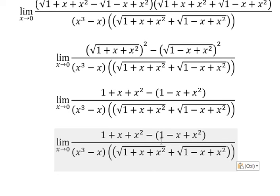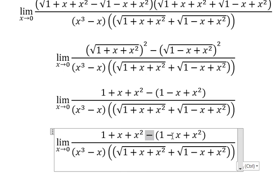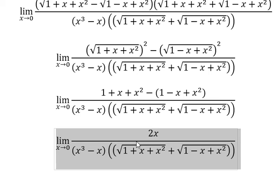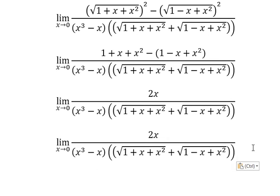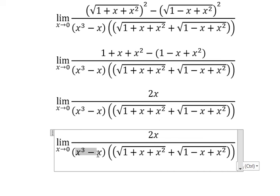1 minus 1, x squared minus x squared. Negative with the negative, you get the positive. So this one, you will get 2x on the numerator, and x cubed minus x on the denominator.